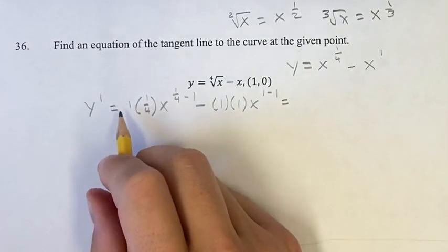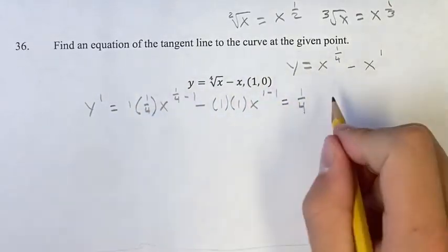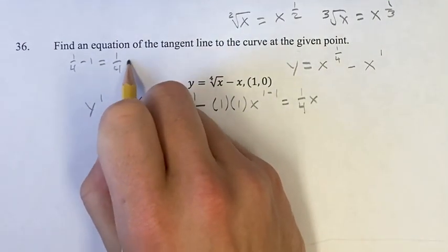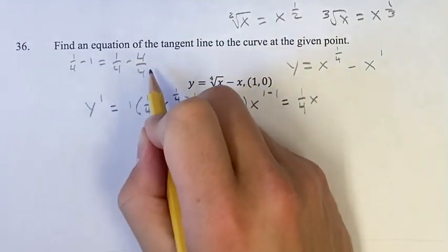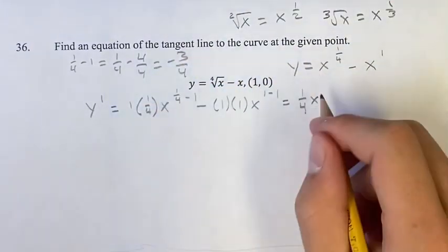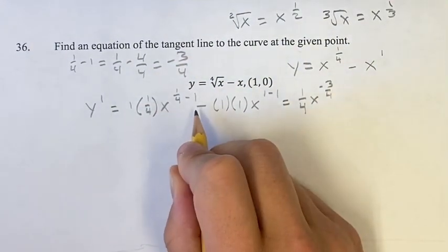Simplifying this, one times one-fourth is one-fourth. x to the one-fourth minus one is one-fourth minus four-fourths. Getting a common denominator equals negative three-fourths. So, one-fourth x to the negative three-fourths.